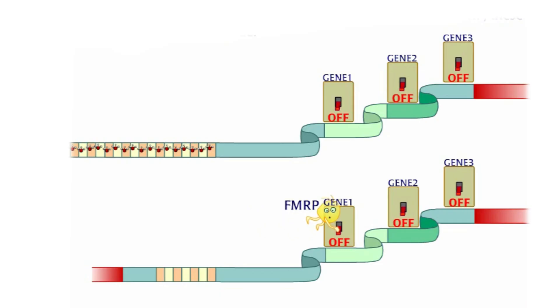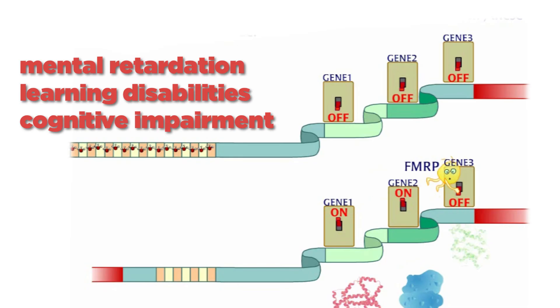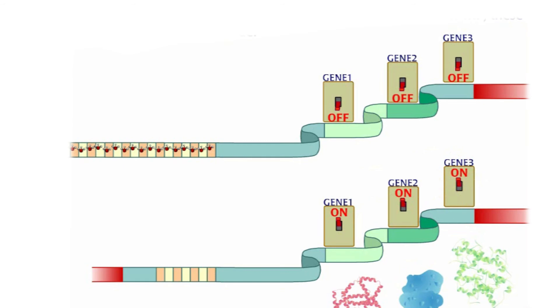Without this protein, a person develops the mental impairment and other characteristics of Fragile X. Exactly how this happens is unclear.